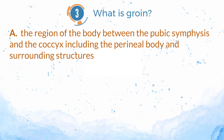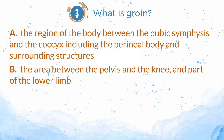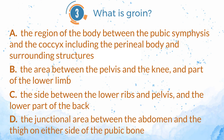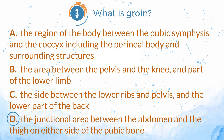Number 3. What is the groin? A. The region of the body between the pubic symphysis and the coccyx, including the perineal body and surrounding structures. B. The area between the pelvis and the knee, and part of the lower limb. C. The side between the lower ribs and pelvis, and the lower part of the back. D. The junctional area between the abdomen and the thigh on either side of the pubic bone. The answer is D.